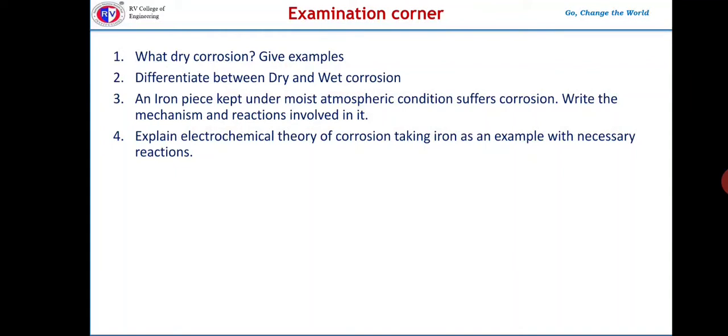Examination corner. The first question related to dry corrosion definition. This type of corrosion occurs in absence of moisture. Example: when a piece of iron at normal temperature is exposed to dry oxygen, or a metal is heated in a foundry at around 800 degree centigrade. Without moisture it undergoes oxidative corrosion.